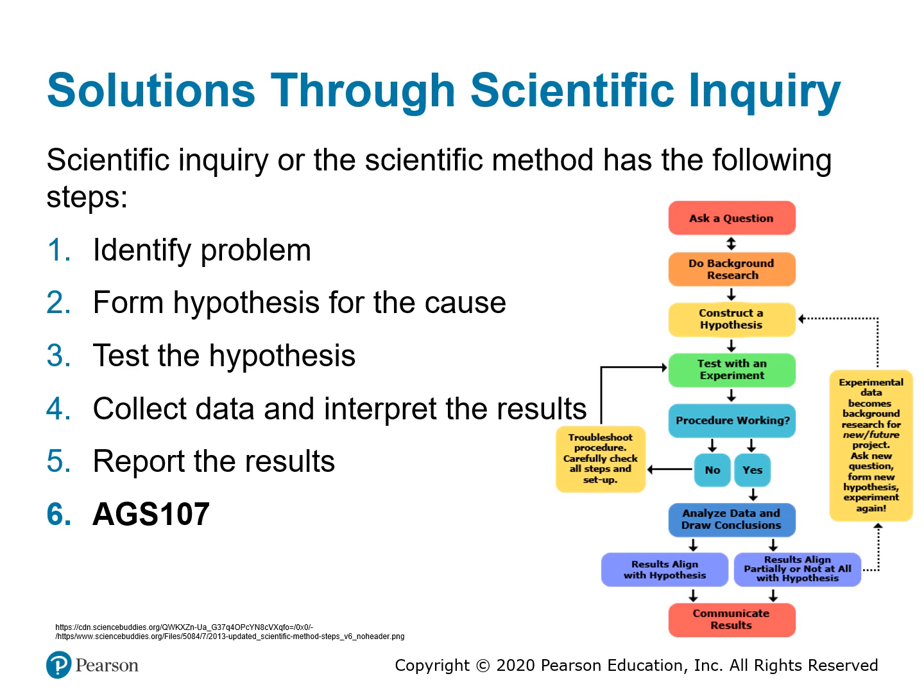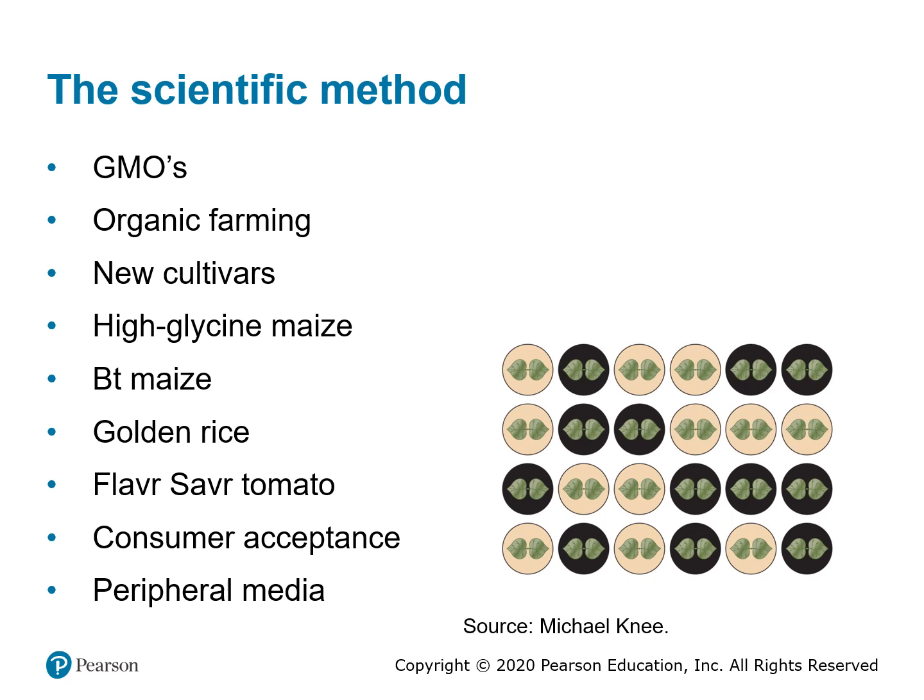Results should be reported through the scientific literature or government or trade literature. Seekers of this information should only consult the scientific literature or government or trade literature — not the peripheral media. This is all learned in the subject AGS 107, and students are reminded of the content and principles of that subject. All students should have completed AGS 107 before doing HRT 101. If not, read the section in the prescribed text 'Plant Science' called 'Solution through Scientific Inquiry,' pages 12 to 16 inclusive.